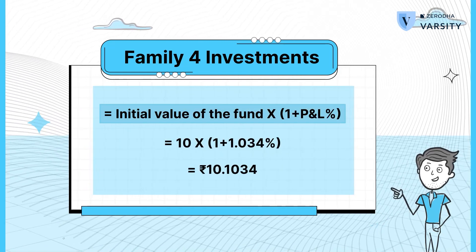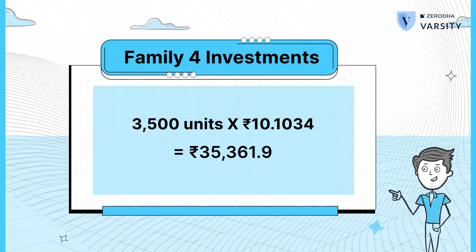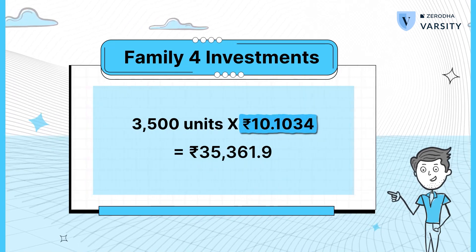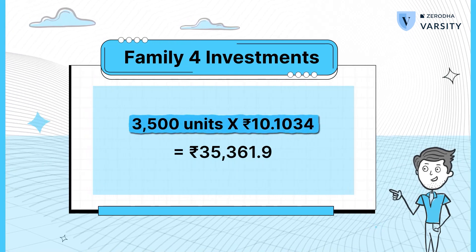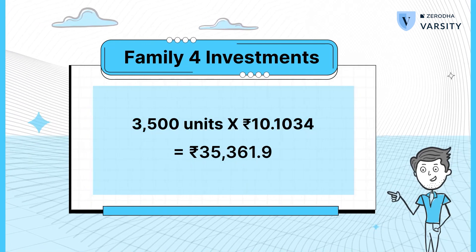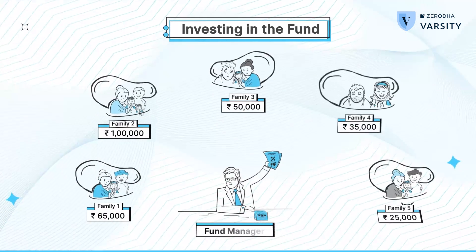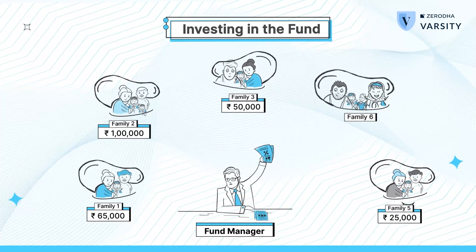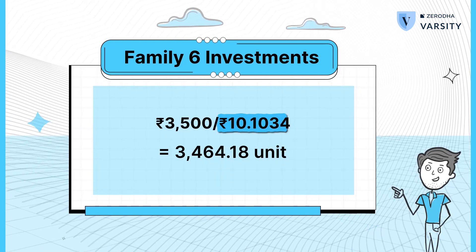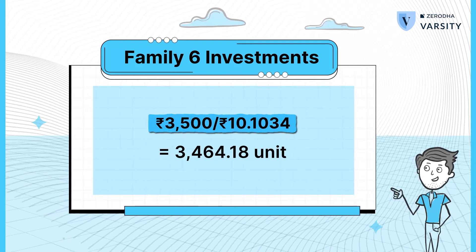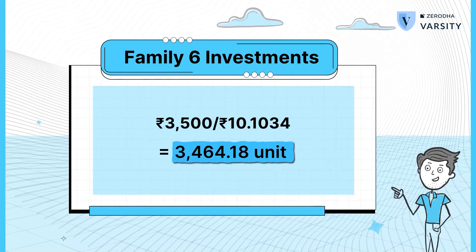So here is the interesting thing. If family 4 now wishes to withdraw their funds, they will have to surrender 3,500 units with each unit valued at 10.1034. Hence, 3,500 into 10.1034 means the family will get rupees 35,361.90. Now let's assume there's a new family — family 6 — which also wants to invest 35,000. The number of units they will get will be at the new notional value of 10.1034, so 35,000 divided by 10.1034 gives them 3,464.18 units.